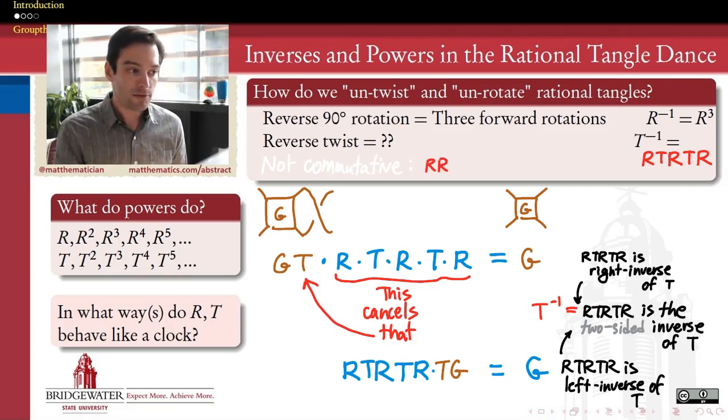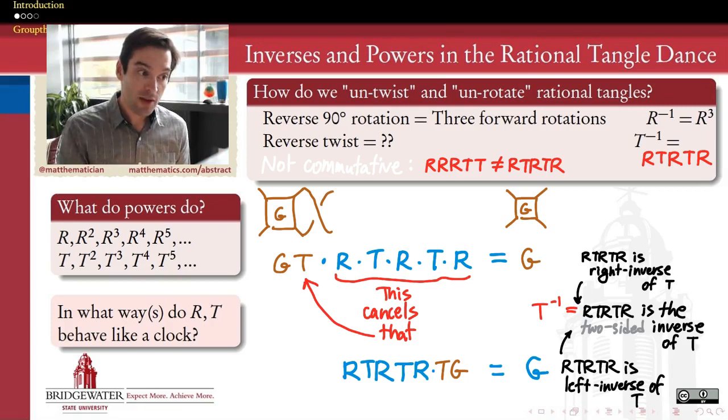Well, we can say for sure, and it doesn't take a lot of convincing, that the operation of following one dance with another that defines the verb for which these T's and R's are nouns, that that operation is not commutative. Whether I do twists before or after rotations actually can make a pretty significant difference.